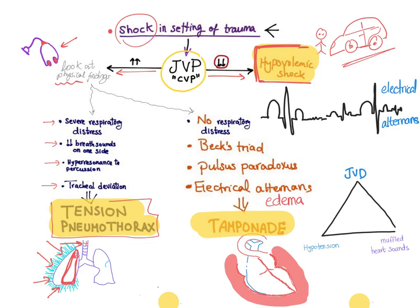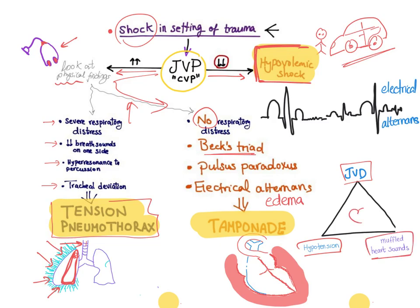If there is no respiratory distress, you look for Beck's triad, which includes jugular venous distension, hypotension, and muffled heart sounds. A helpful way to remember this: draw a triangle — anything above is increased (jugular venous pressure), and anything below is decreased (blood pressure and heart sounds). This is how you identify cardiac tamponade.